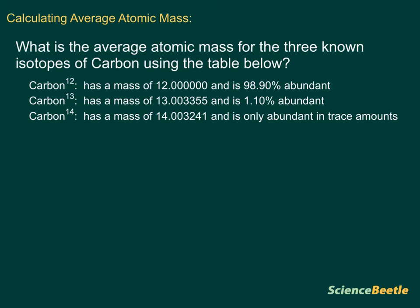So we've already got the information here, and you can see that we've got three isotopes: carbon-12, carbon-13, carbon-14, and we've got the relative masses.